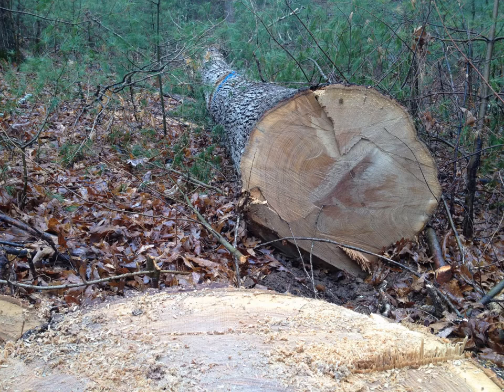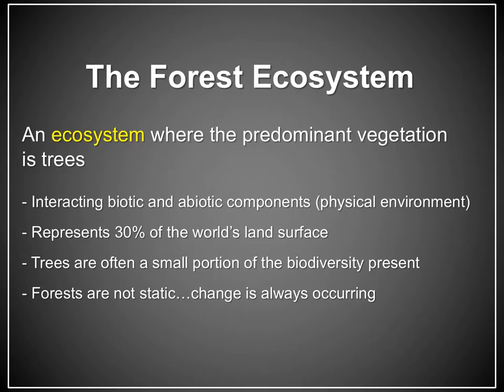Let's take a step back to put the discipline of forestry in perspective. As the name would imply, a forest ecosystem is one in which the predominant vegetation is trees. An ecosystem, by definition, contains both biotic, or living components, and abiotic, non-living components which comprise the physical environment. Two key points to keep in mind: first, even though trees are generally the most obvious components of these systems, they comprise just a fraction of the total biodiversity that's there. Second, forest ecosystems are inherently dynamic — they're always changing regardless of whether or not we directly interact with them.